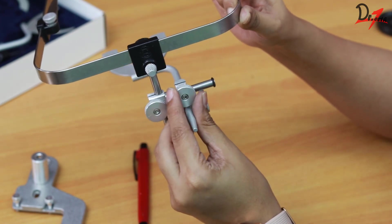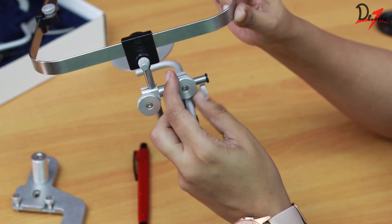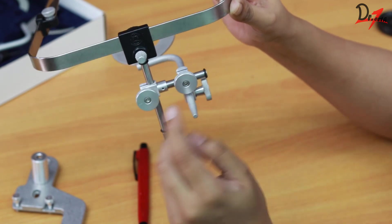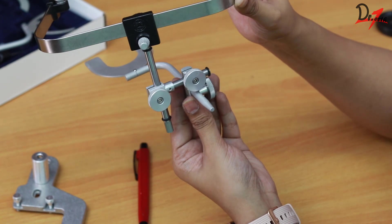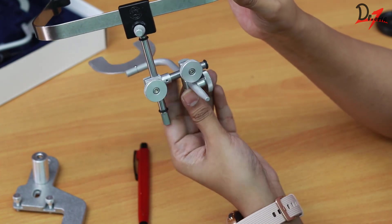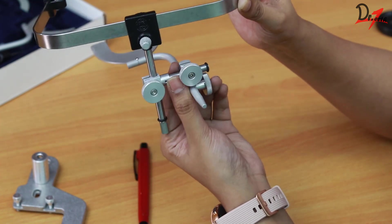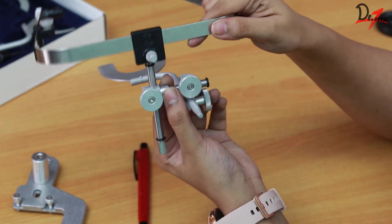When I loosen thumbscrew two, I can actually move the assembly left and right. And if I just tighten this and open thumbscrew one, you can see that we can move the assembly now up and down. So these are the functions of these thumbscrews.